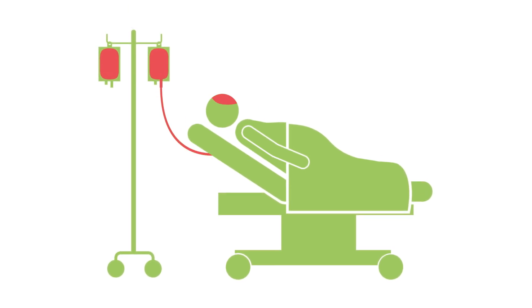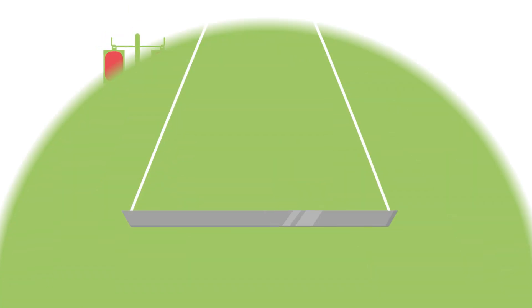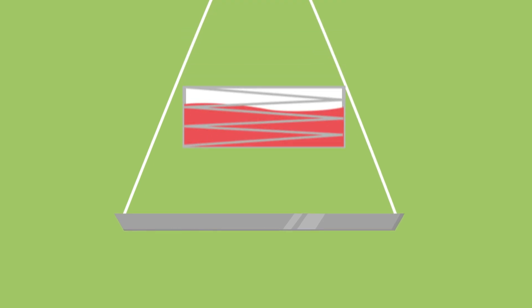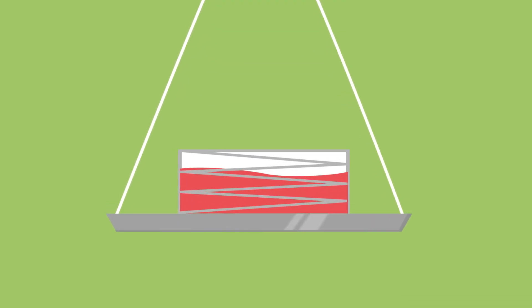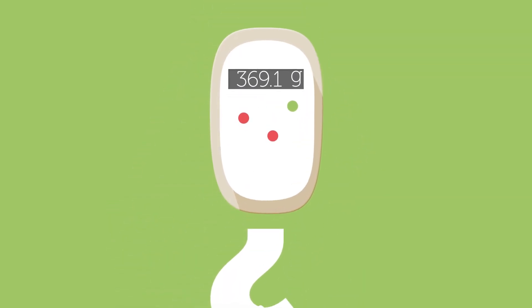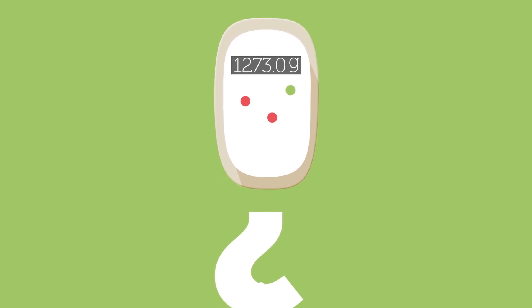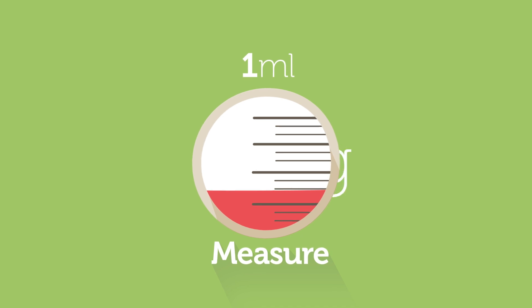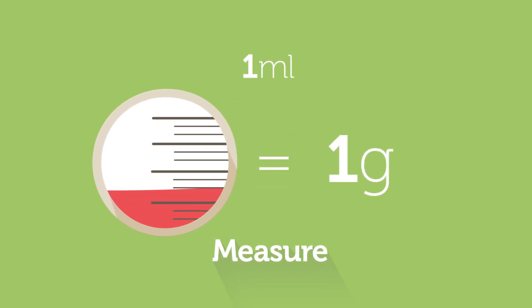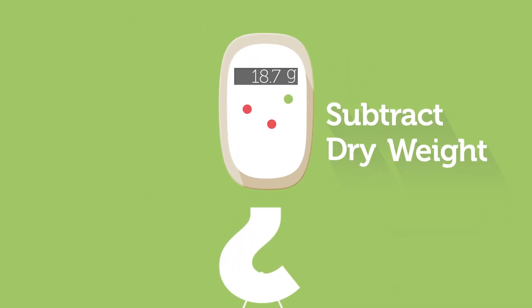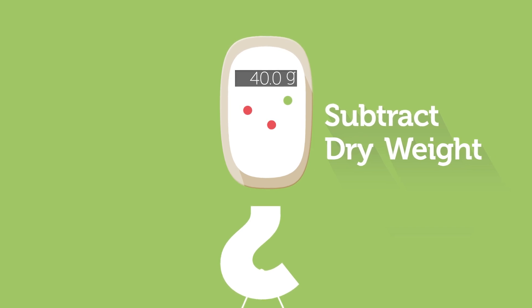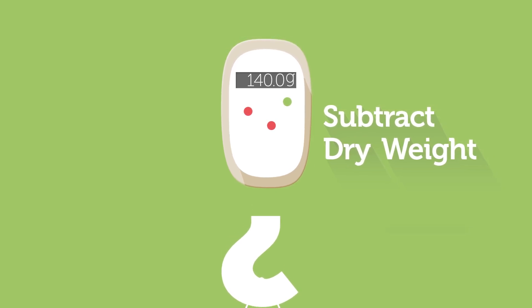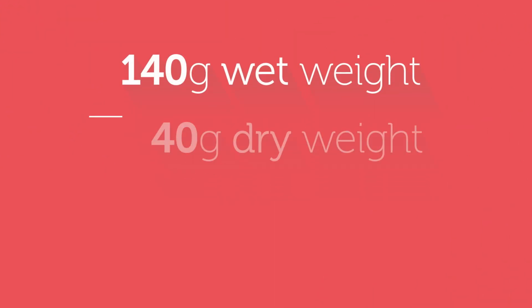First, let's talk about weighing blood loss. To establish the amount of blood loss, place the blood-soaked items on a scale. Subtract the dry weight from the blood-soaked weight to determine the volume of blood loss. As a general rule, one milliliter of blood weighs approximately one gram. For example, if the dry weight of an item is 40 grams and this item weighs 140 grams when saturated, then 140 gram wet weight minus 40 gram dry weight equals 100 milliliter blood loss.